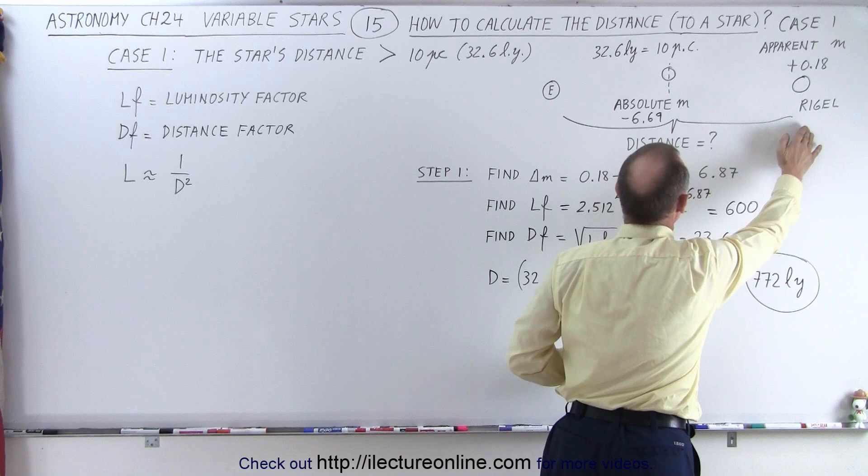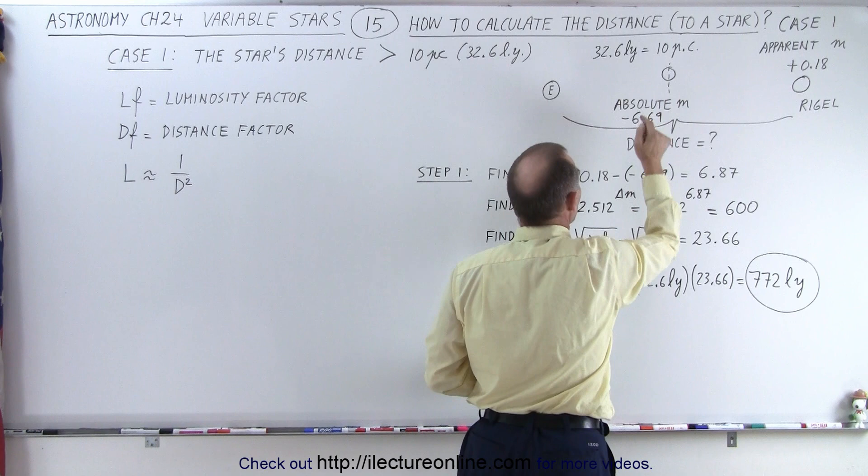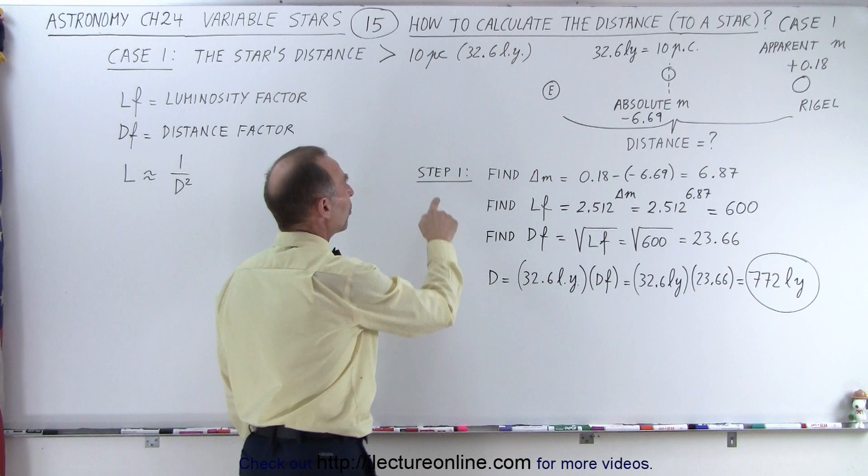Rigel is much farther away than 10 parsecs away from us. So it appears with an apparent magnitude of 0.18. But when it is at a distance of 10 parsecs, it has an absolute magnitude of negative 6.69. So how do we calculate the distance to Rigel using those two numbers? Well, you go through a series of steps.